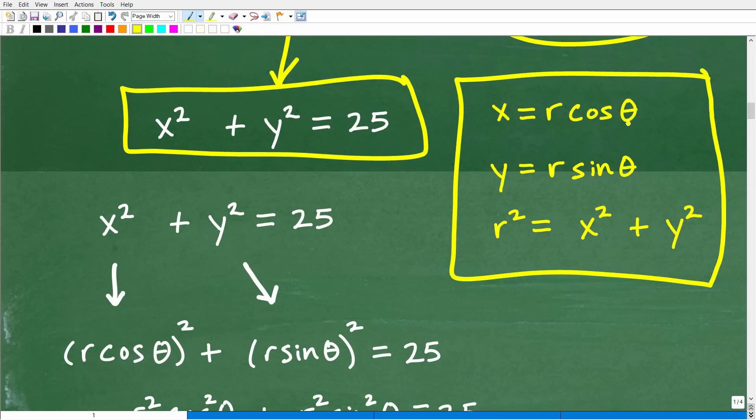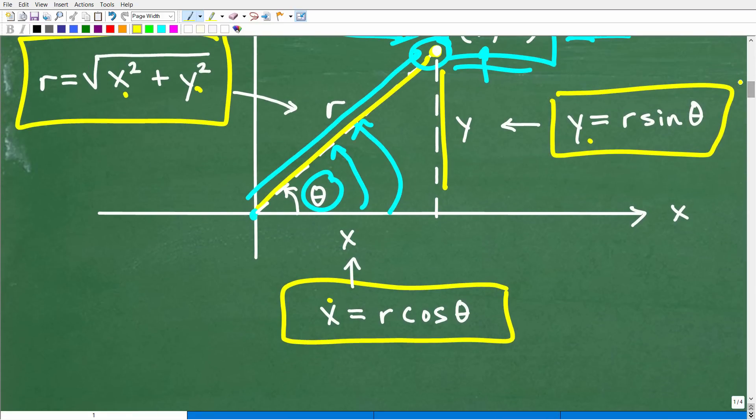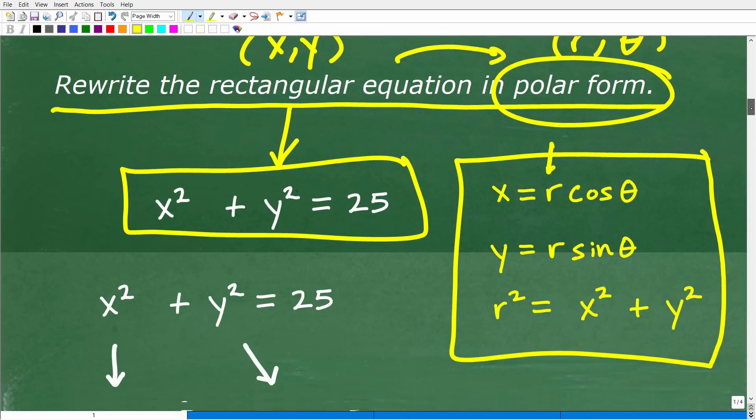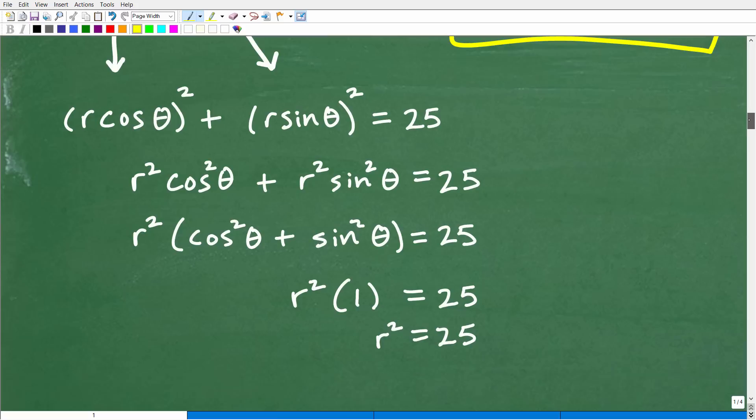So you never want to forget these. This is x is equal to r cosine theta. Again, r is the radius. y is equal to r sine theta. And r squared is equal to x squared plus y squared. And if we take the square root of both sides, we get r is equal to the square root of x squared plus y squared. So if you understand that, then this is basically just a bunch of algebra. So what we're going to do is we're going to replace the x and the y here with r cosine theta and r sine theta. So let's go ahead and do that right now.